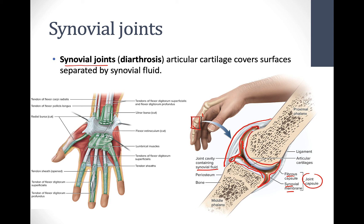A bursa is a sack of synovial fluid not necessarily inside a joint. In this picture of the hand, you can see the bursae colored green, creating fluid-filled sacks that allow tendons to pass through with very low friction. This is especially important in areas like the hand and foot where tendons move frequently, reducing irritation. Any disease or inflammation of the bursa is called bursitis, while inflammation inside a joint is called arthritis — 'arth' meaning joint.